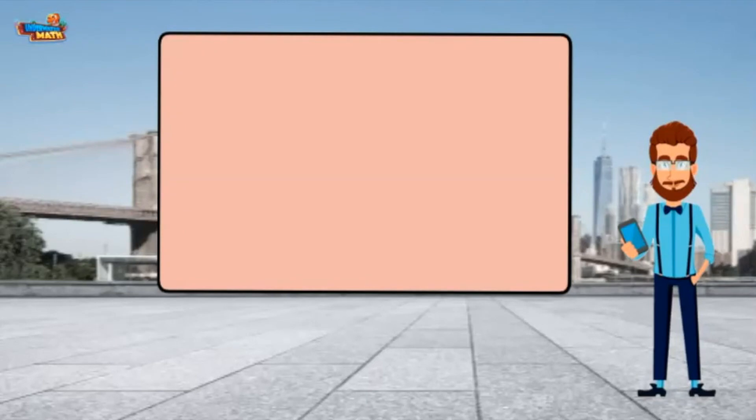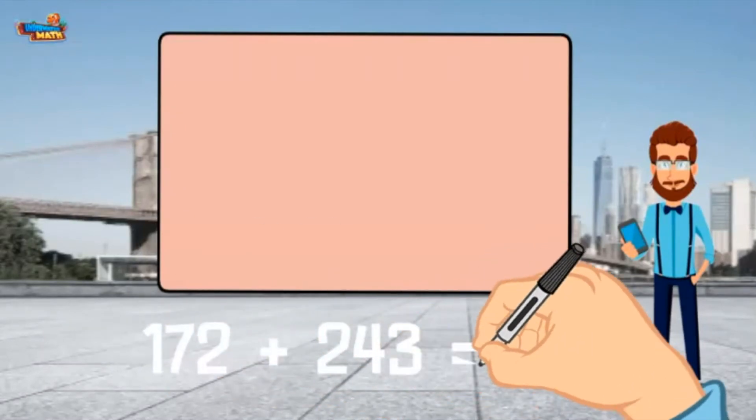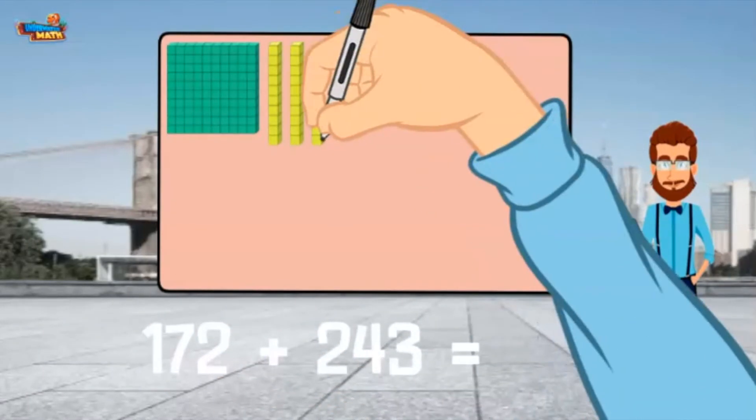Let's add. 172 plus 243. First, I model 1 hundred, 7 tens, and 2 ones.